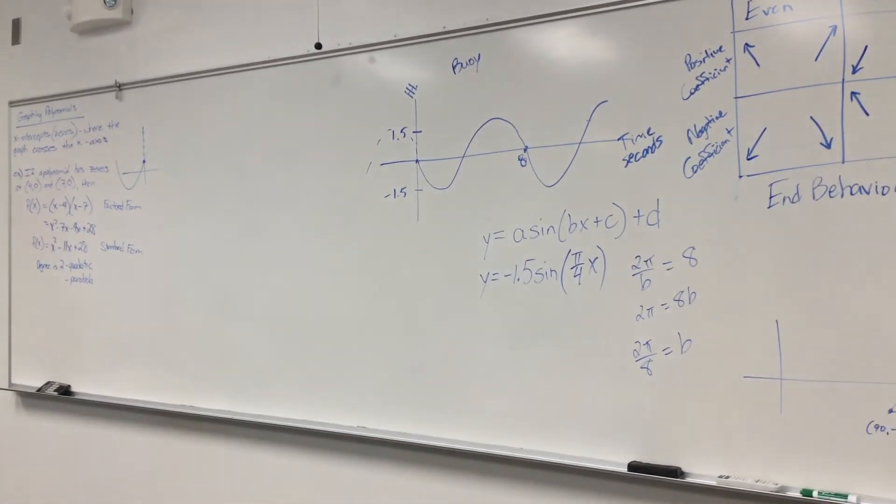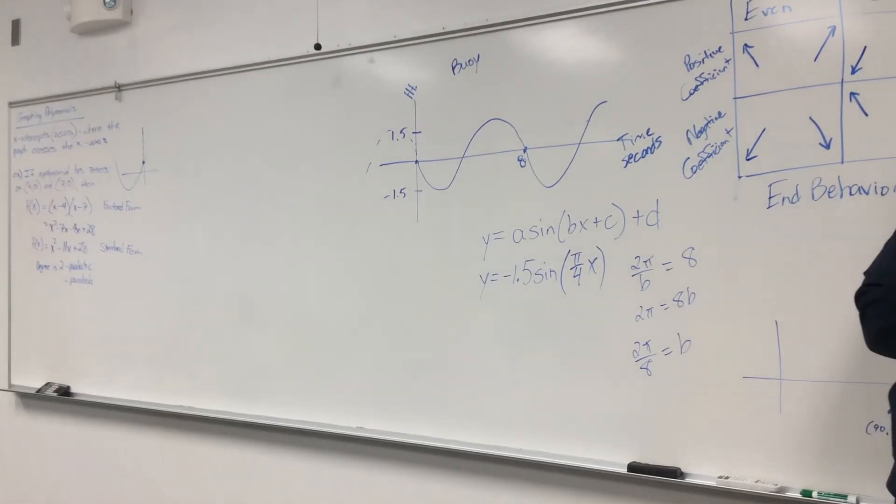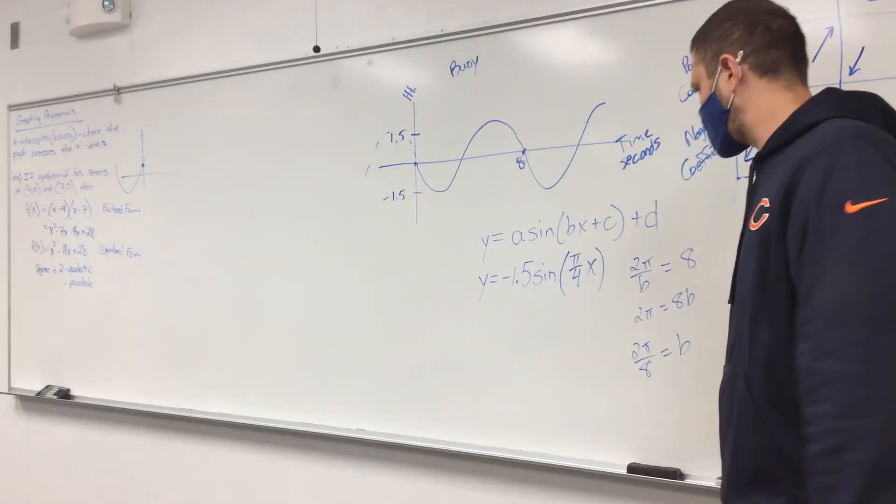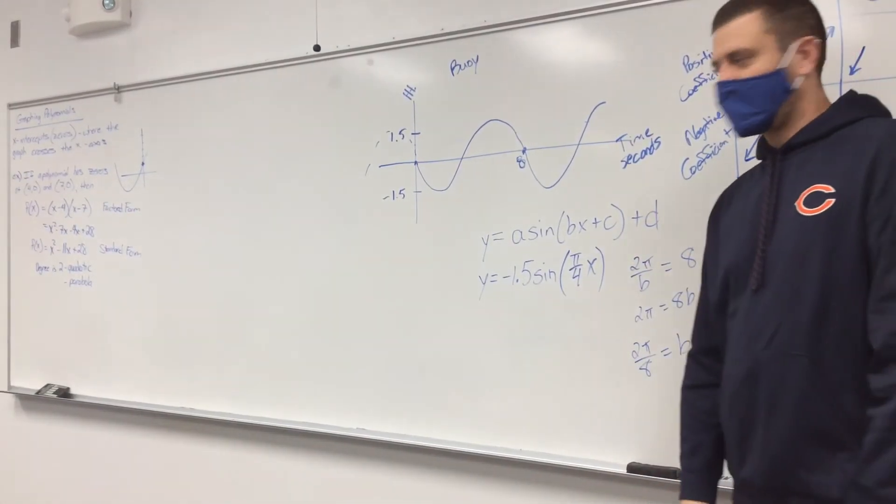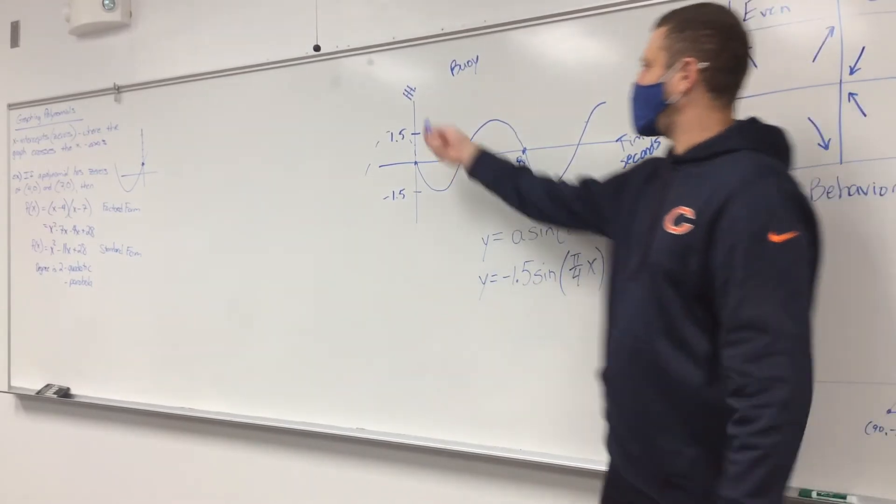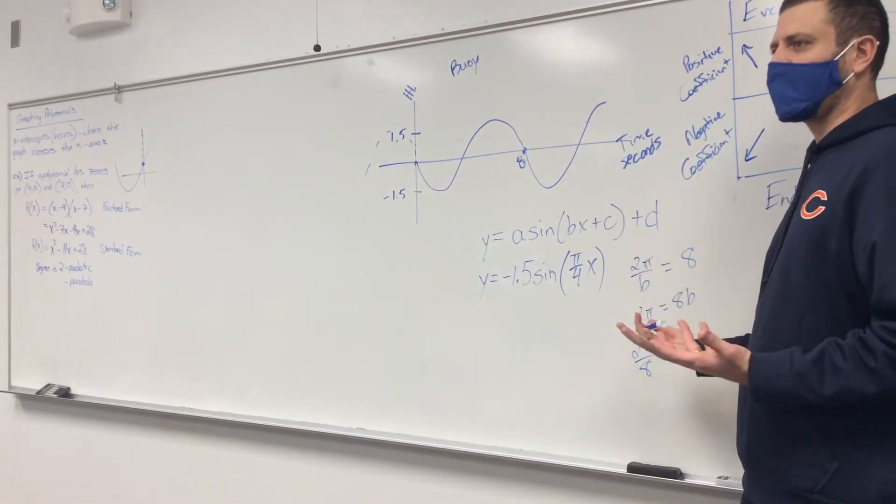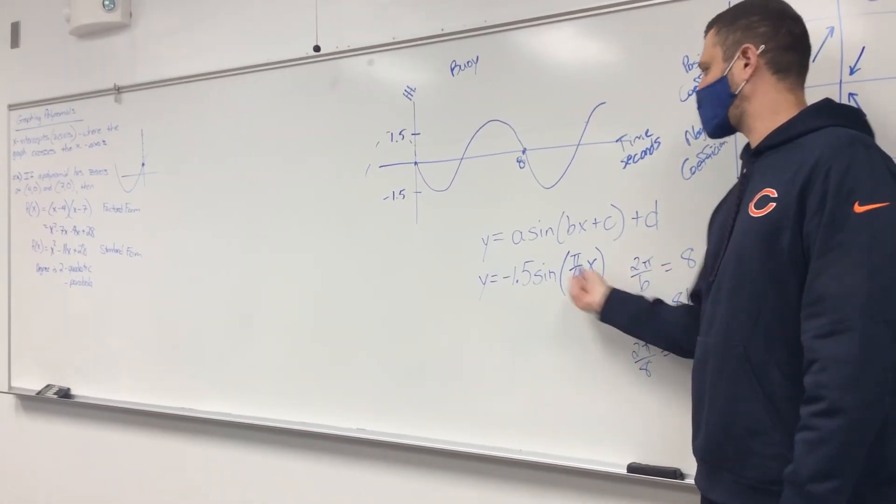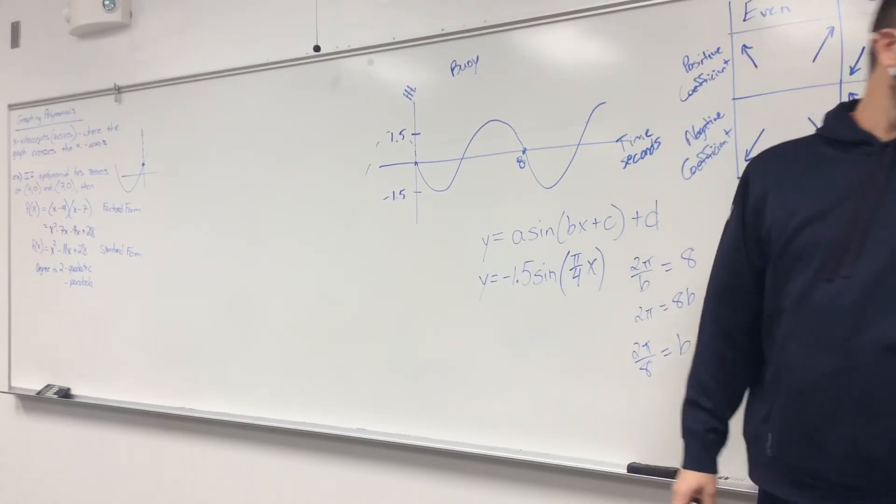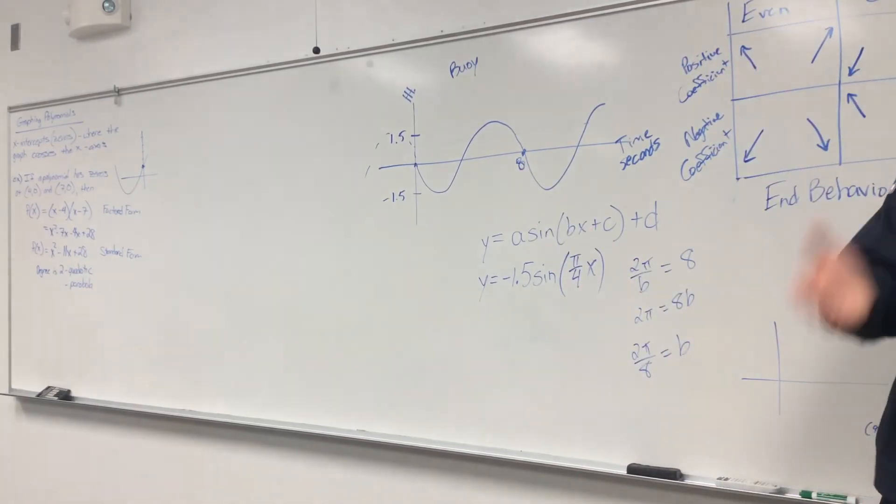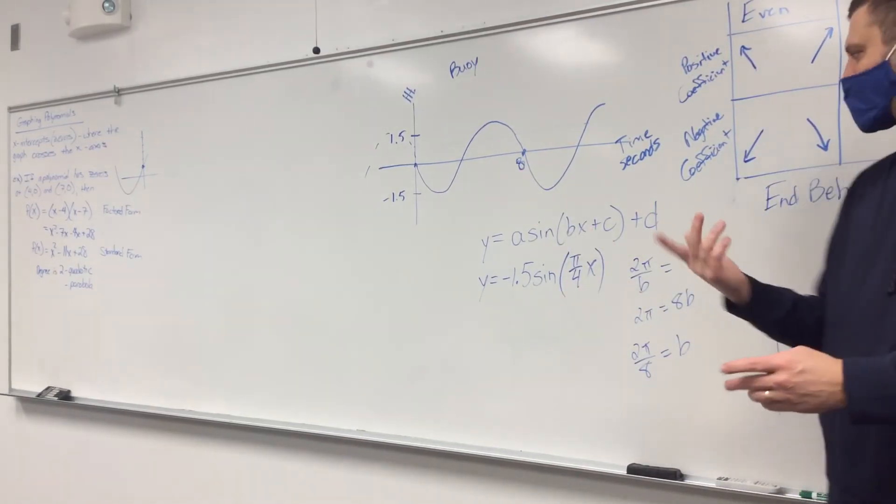All right. So then it said, determine, hey, listen up. It said determine the height of the buoy at 3 seconds. Well, what do you do? Just put 3 in for what? Or X? Put 3 in. Determine the height. So determine the Y value with X equals 3 seconds. Yeah, Nick. So plug a 3 in for X, see what you get for Y. This is part B. This was part B on the question, yes. So determine what the height is at 3 seconds, and then it said determine what the height is at 12 seconds.